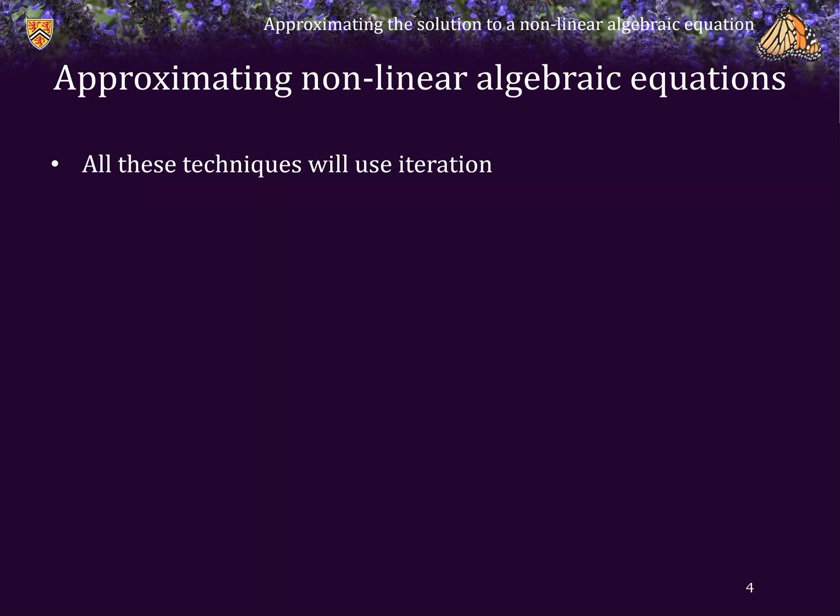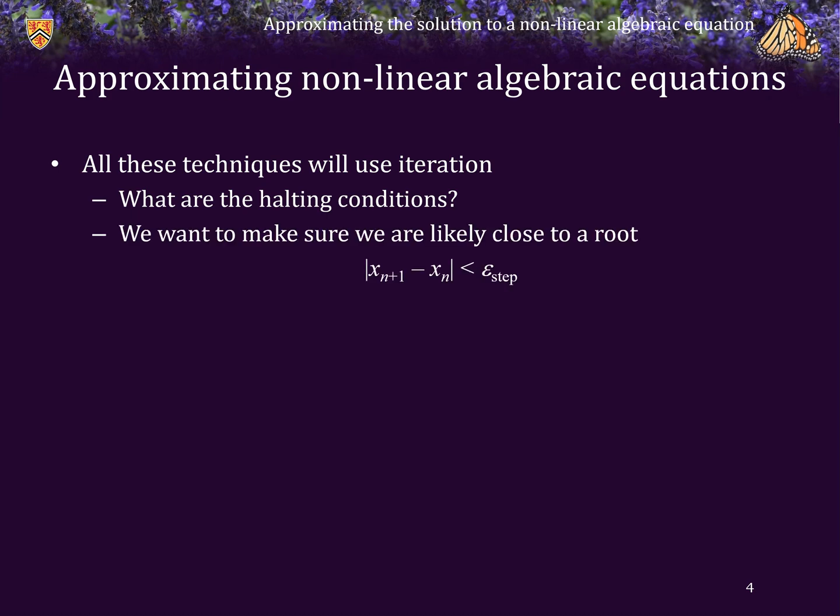Now, all of these techniques are going to use iteration, and if we are using iteration, we must ask, what are the halting conditions going to be? Well, as before, we want to ensure that the step size is sufficiently small, so the distance between successive approximations should be less than some epsilon step size.